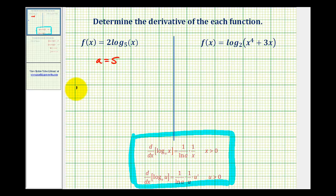So f prime of x is equal to 1 divided by natural log a, which is natural log 5, times 1 over x. And now we just simplify. We have 1 divided by x natural log 5.